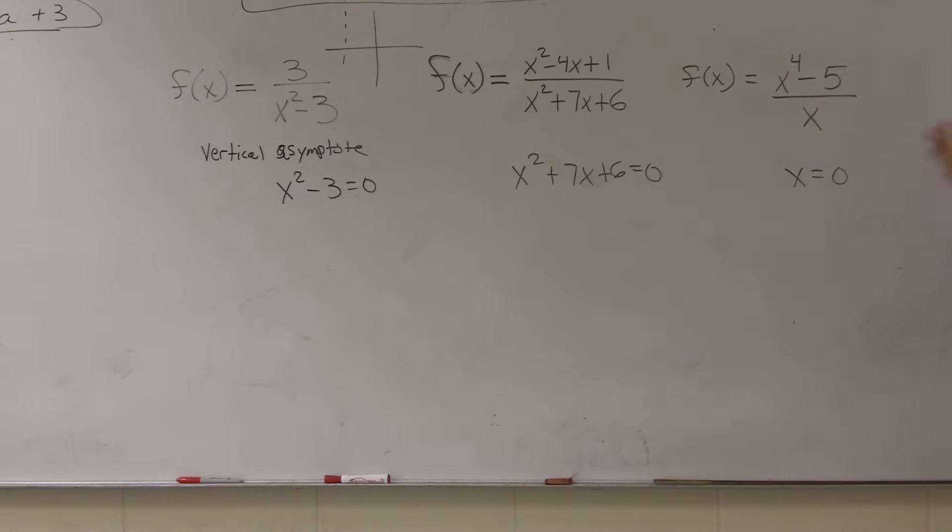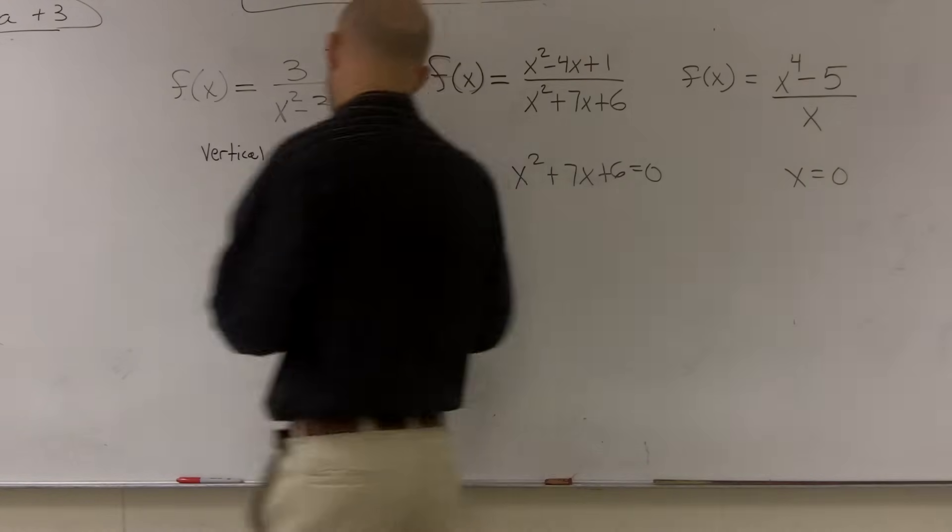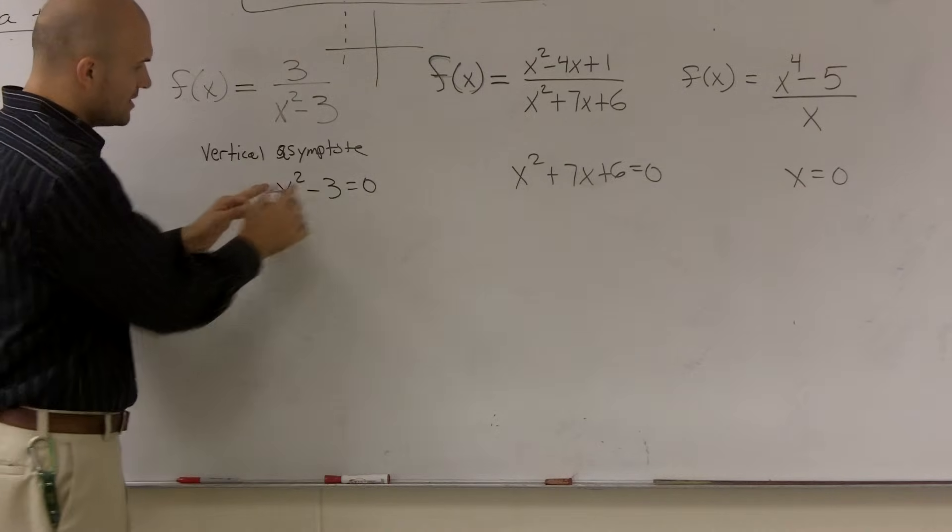An asymptote is when you look at a graph, the graph is never going to have a value at that point. And we'll get into it when we talk about graphing. You guys will see what I'm talking about.